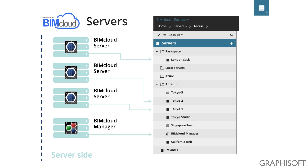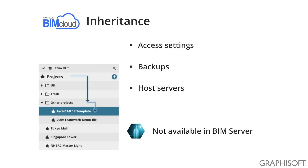The folder structure helps the server manager identify the location of the servers. Since there are a large number of users and projects on the server, managing them separately would be a very tiresome process. To make life easier, BIMcloud has an inheritance function. Any setting applied on a higher level is inherited downwards in the project tree. These settings could be the access settings, backup schedules, and the host servers.